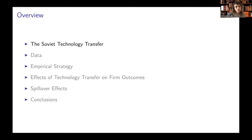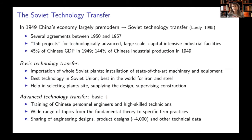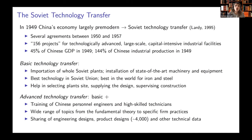To get started with Soviet technology transfer: when the People's Republic of China was founded in 1949, after 22 years of civil war, its economy was largely destroyed. The Chinese government pressed hard to get a technology transfer from the Soviet Union. This technology transfer — part of a broader form of assistance between the two countries — involved the signature of several agreements between 1950 and 1957 for the construction of the so-called 156 projects, whose goal was building technologically advanced, large-scale, capital-intensive industrial facilities. This program was massive: it accounted for 45% of Chinese GDP in 1949 and 144% of Chinese industrial production in 1949.